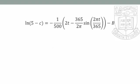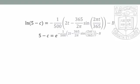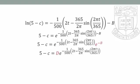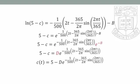Next, we multiply both sides by -1 and exponentiate both sides. The left-hand side becomes 5 - C, and the right-hand side is e raised to the power of the previous expression. We separate the constant B from the rest of the exponent, and let d = e^B to simplify. This gives 5 - C = d·e^[-(1/500)(2t - (365/2π)sin(2πt/365))]. Rearranging to make the chemical concentration the subject, we get C(t) = 5 - d·e^[-(1/500)(2t - (365/2π)sin(2πt/365))].